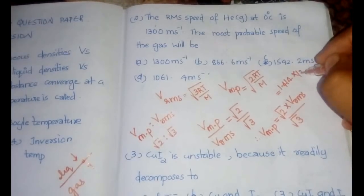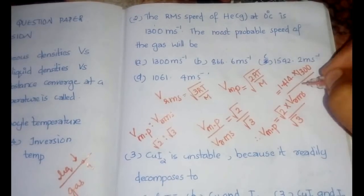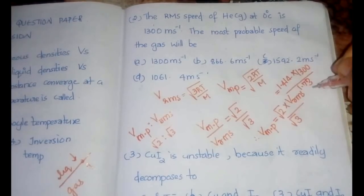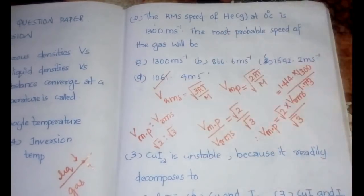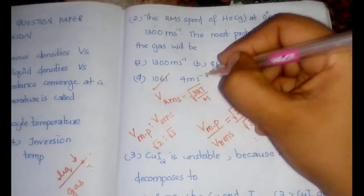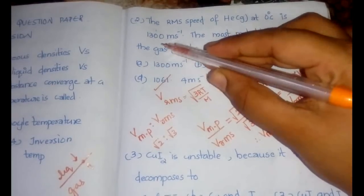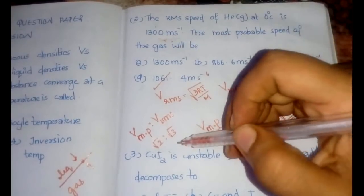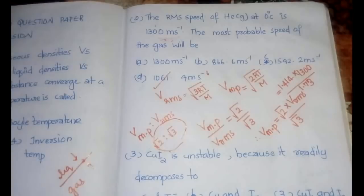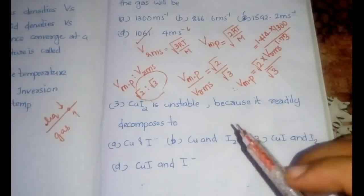The approximate value of √2 = 1.414, the RMS velocity given is 1300 m/s, and √3 ≈ 1.73. Calculating with these values gives option D: 1061.4 m/s. We can confidently use this equation because we have the RMS value and already know the ratio.